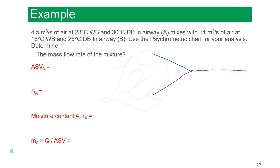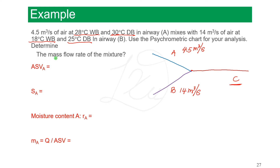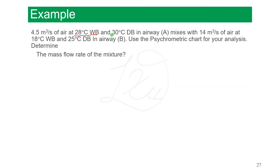Let's look at an example. Airway A and airway B meet and combine into airway C. In airway A, the volumetric flow rate is 4.5, wet bulb temperature is 28, and dry bulb temperature is 30. In airway B, the volumetric flow rate is 14, wet bulb temperature is 18, and dry bulb temperature is 25. From the psychrometric chart, we can find the ASV, sigma heat, and moisture content for both airways A and B.